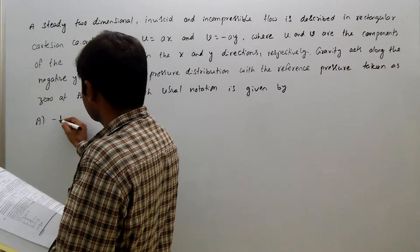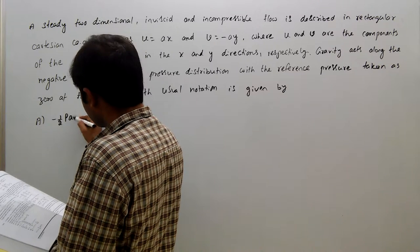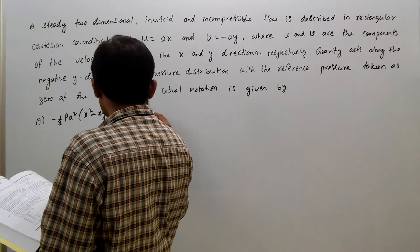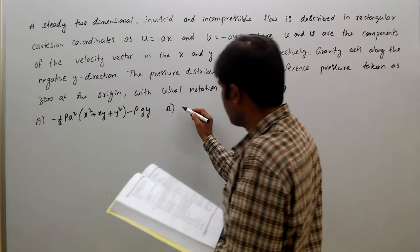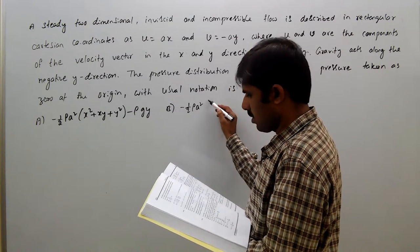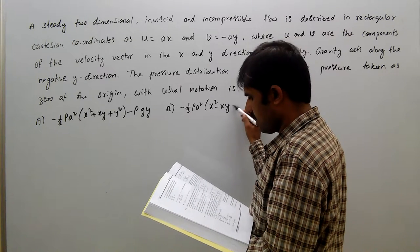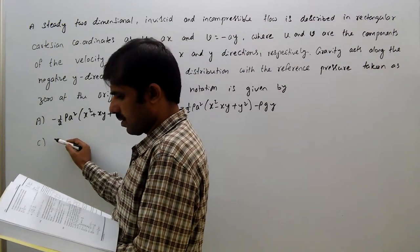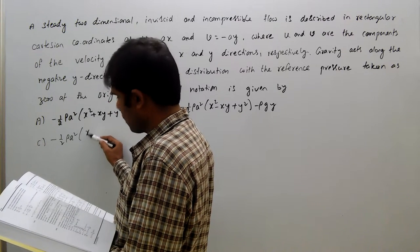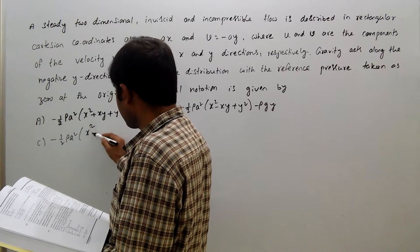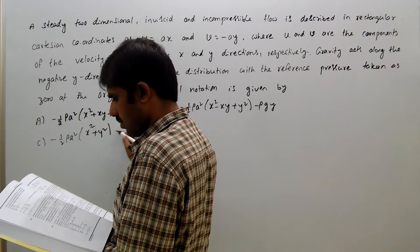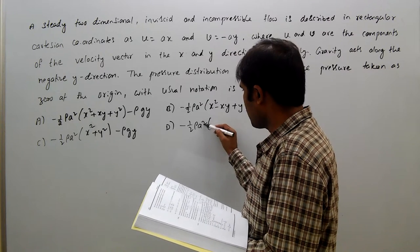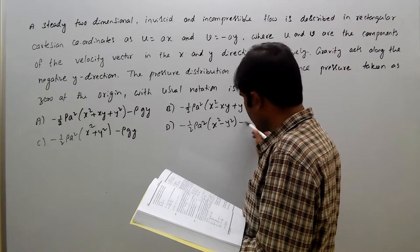Option A: minus half rho a squared (x squared plus xy plus y squared) minus rho g y. Option B: minus half rho a squared (x squared minus xy plus y squared) minus rho g y. Option C: plus half rho a squared (x squared plus y squared) minus rho g y. Option D: minus half rho a squared (x squared minus y squared) minus rho g y.